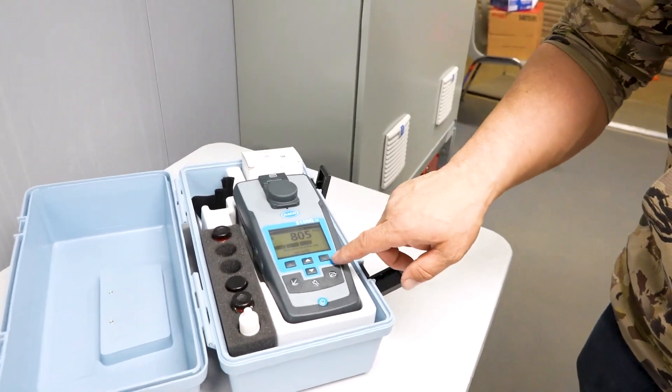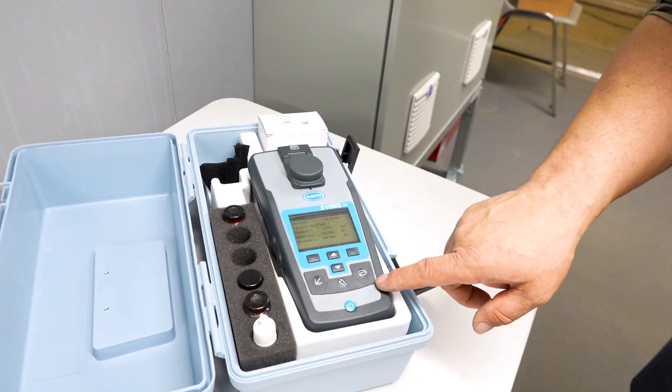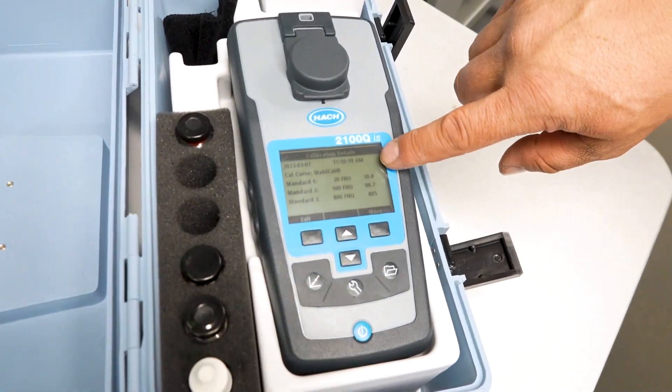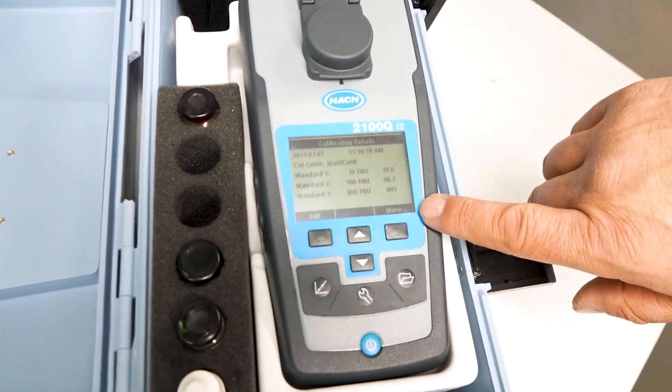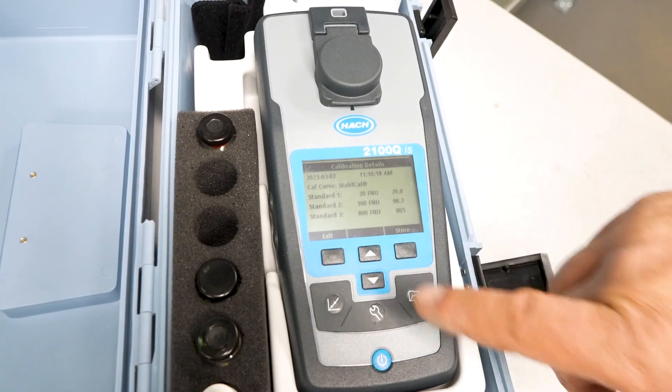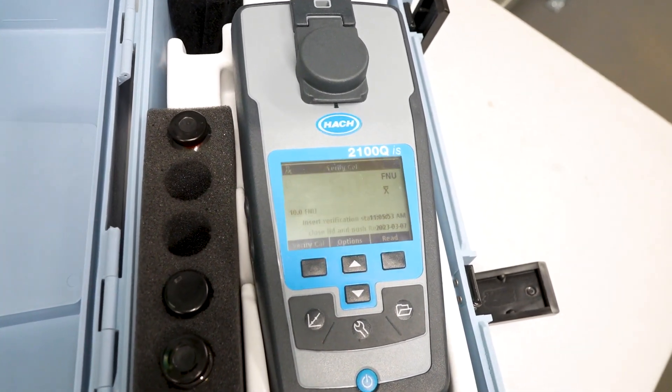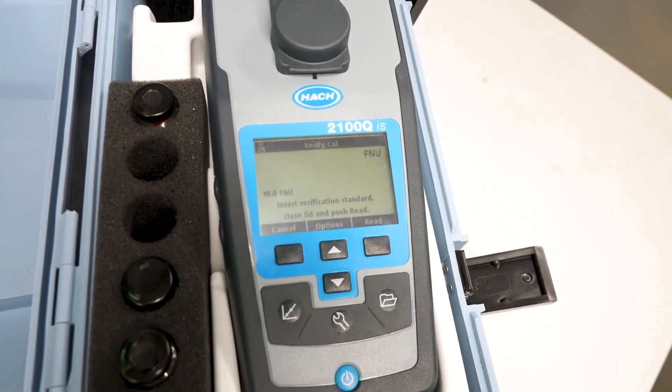Once we've got the calibration done, we hit done. And we always want to store our results, we hit store, and you can go through what everything was reading. Now we hit store, so it archives it into your unit, and then we are on the home screen again.